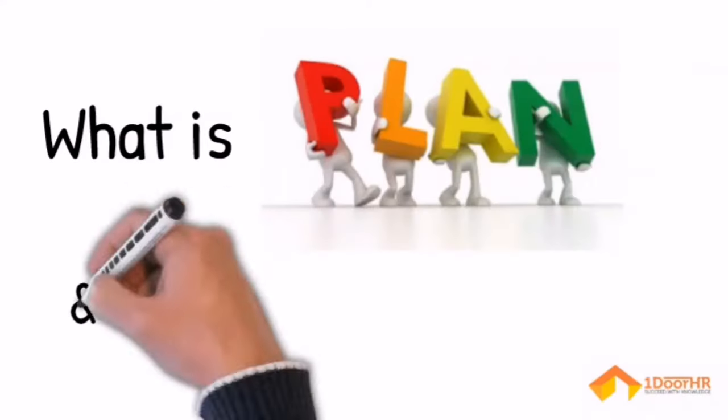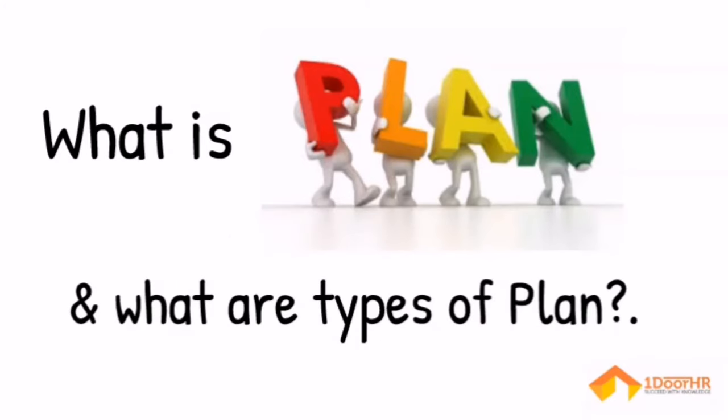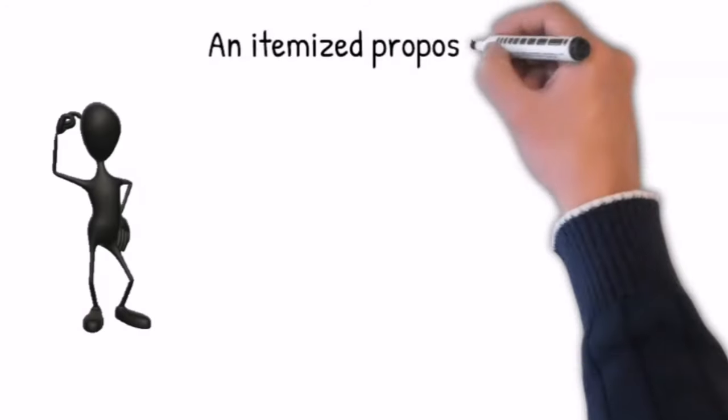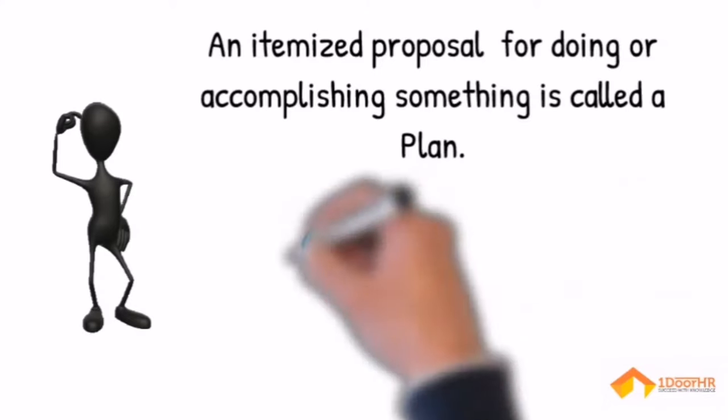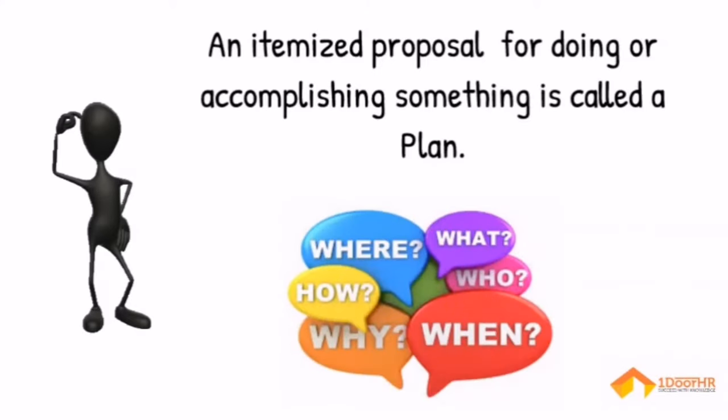Hi, welcome! Let's see what is plan and what are types of plan. An itemized proposal for doing or accomplishing something is called a plan. And what is planning? Planning is determining where to do, what to do, how to do, when to do, and who will do.